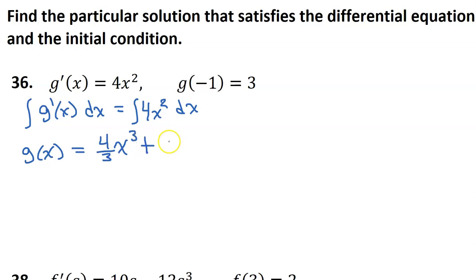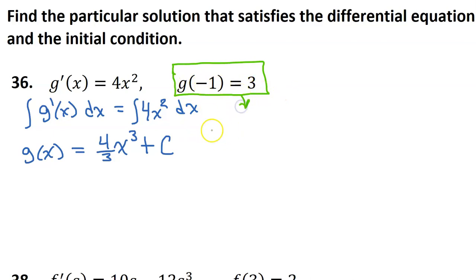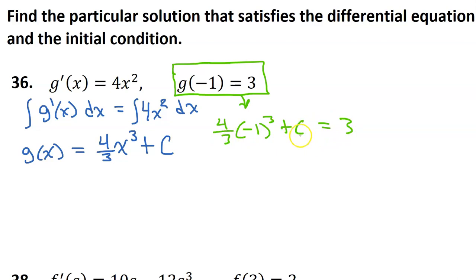And then we have to divide by that new exponent, so that's why we're going to have 4 over 3. Don't forget to include your constant of integration, c. We can use this initial condition to figure out what the constant of integration actually is. So g at negative 1 is 3, meaning 4/3 times negative 1 to the third power plus c must equal 3.